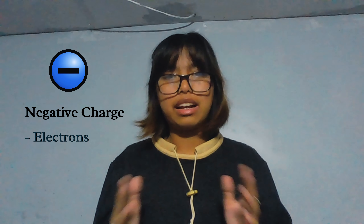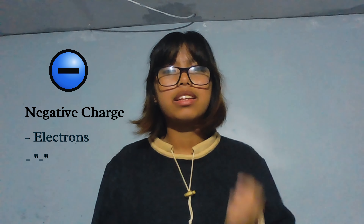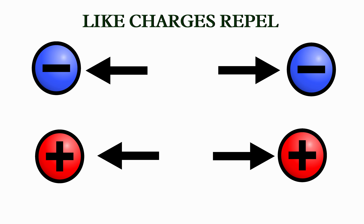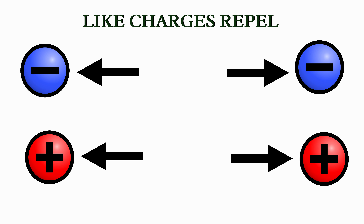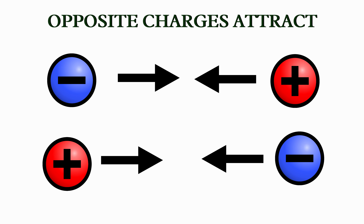Positive charge is associated with protons and has the symbol plus. While negative charge is associated with electrons and has the symbol minus. Always remember that like charges repel each other, just like magnets, and opposite charges attract each other.